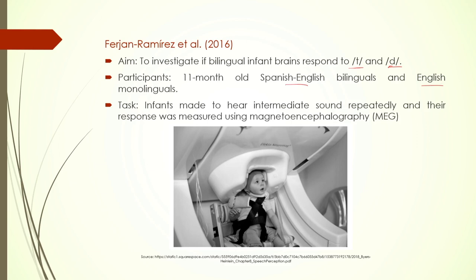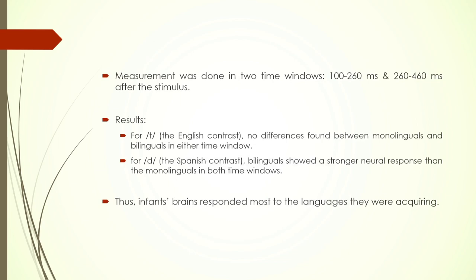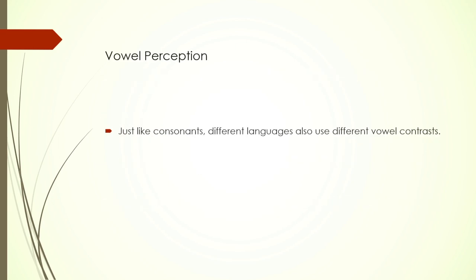Another study investigated whether the bilingual infant brain responded to the difference between 'ta' and 'da' sounds. Participants were 11-month-old Spanish-English bilinguals and English monolinguals as the control. This was an MEG study. The infants were made to hear intermediate sounds repeatedly and their response was measured. Measurement was done in two time windows: 100–260 milliseconds and 260–460 milliseconds after the stimulus. For the English contrast 'T', no differences were found between monolinguals and bilinguals in either time window. For the Spanish contrast 'D', bilinguals showed a stronger neural response than monolinguals in both time windows — a rather striking finding.